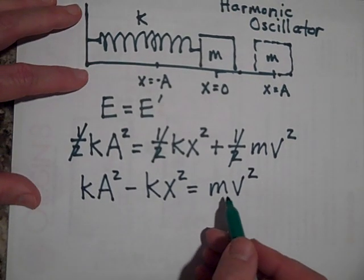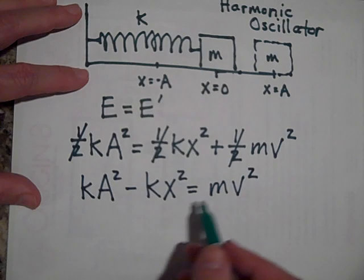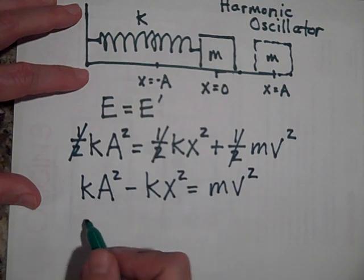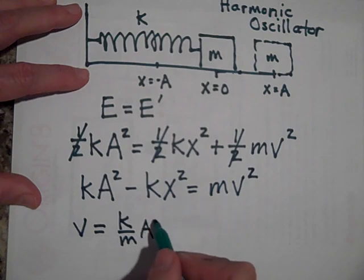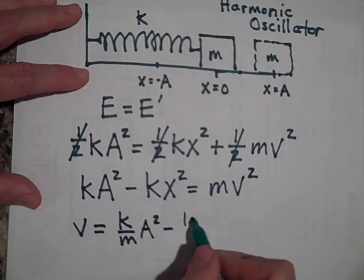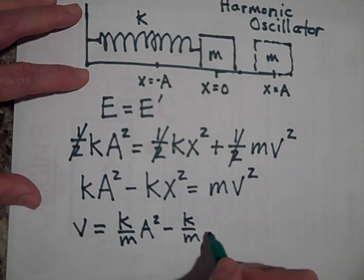And then maybe I'll bring the M on the other side and then take the square root. So that's going to give me that V is equal to K over M A squared minus K over M X squared.